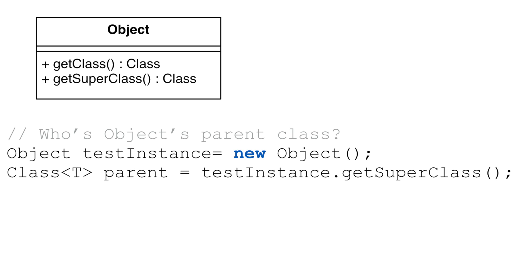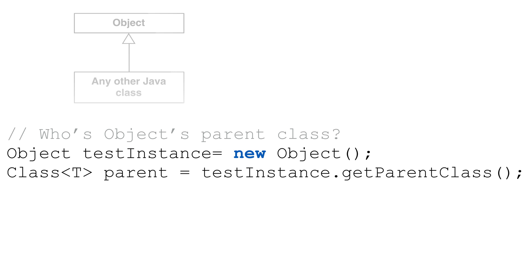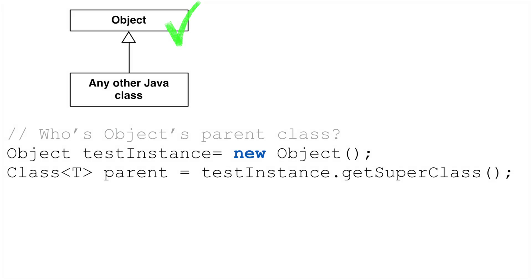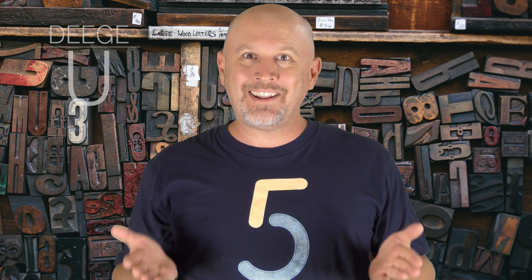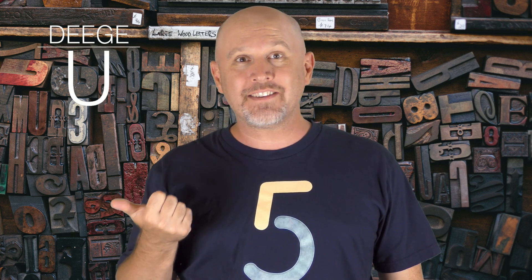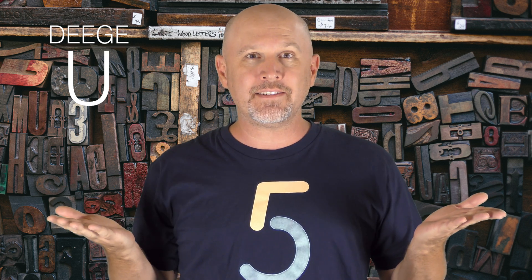What happens when we call getSuperClass() on the Object class? Well, we get null. That makes sense since Object is the top class in every hierarchy. So, that gives us two ways to determine the class of an instance: we can test against a known class using the instanceof keyword, or we can just ask the object what class it is.